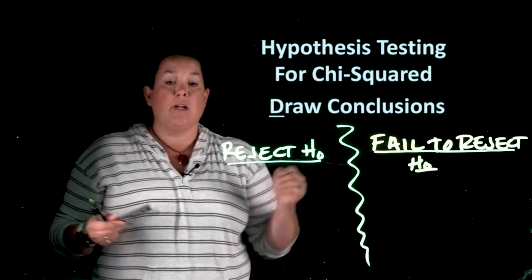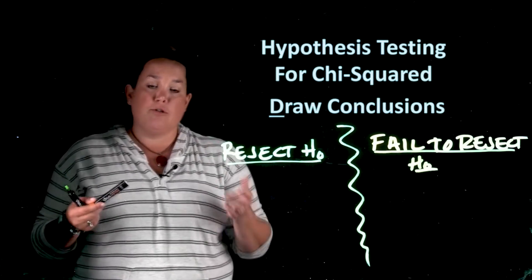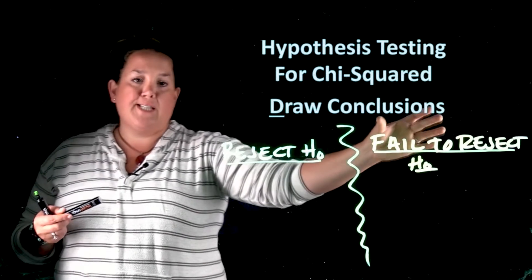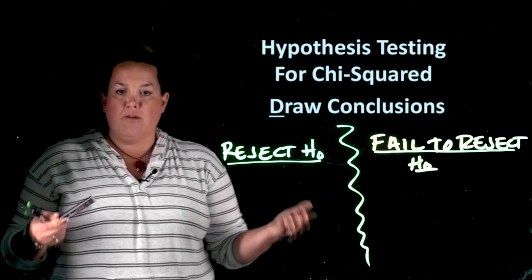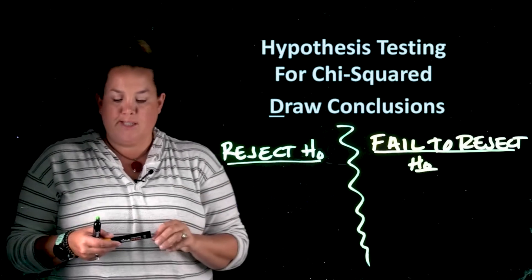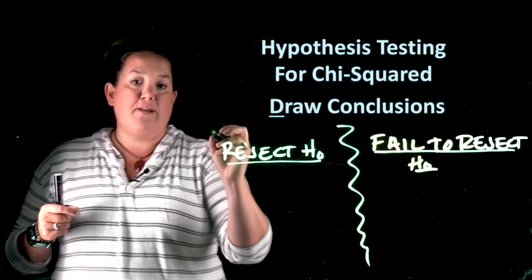When you do a hypothesis test, you're doing it to see if there's evidence against the null in favor of the alternative. You're not performing a hypothesis test to prove that the null is true. So you wouldn't want to say accept the null because we actually haven't done that. We would just say that there's not enough evidence to go against it.